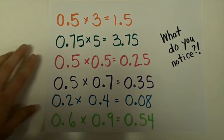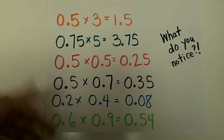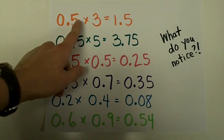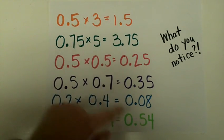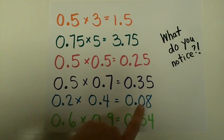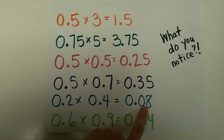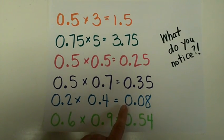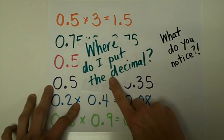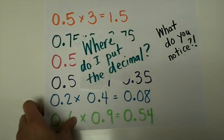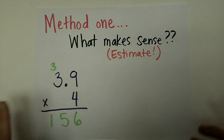Many of you noticed that pattern and wanted to just say, oh, it's 15. The problem is that we need to know in each one of these exactly where to place the decimal. How would we know, for example, if this was 8, or if the decimal would go here and it would be 8 tenths, or 8 hundredths, or even 8 thousandths? The big question that we are going to use the algorithm to figure out is: where do I put the decimal? But before we do that, let's think first about what makes sense.